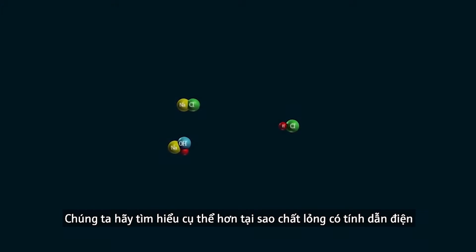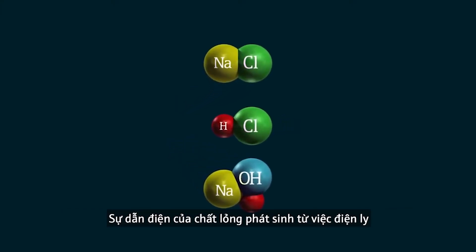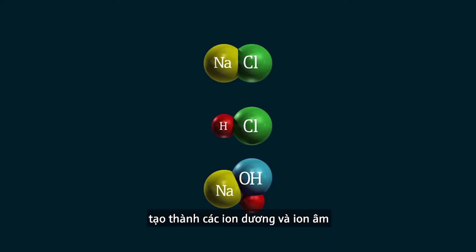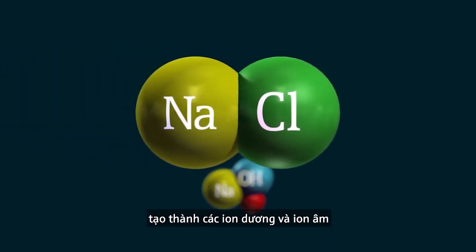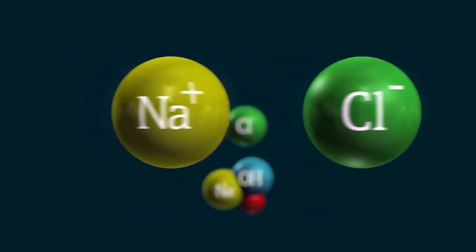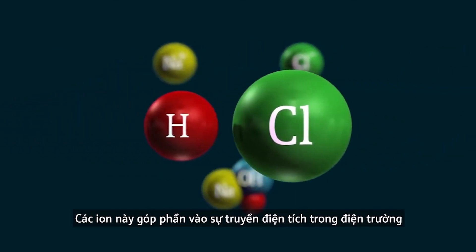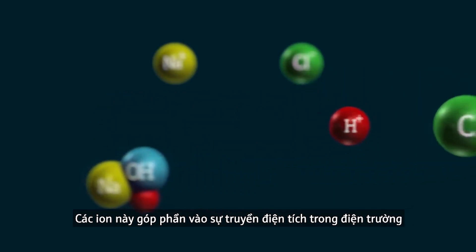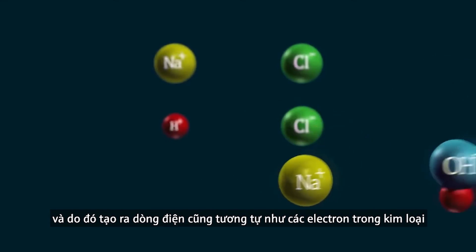The electrical conductivity of a liquid arises from the dissociation of soluble salts, acids and bases to form positively charged cations and negatively charged anions. These ions contribute to the charged transport in the electrical field and thus to the current flow, just like electrons in a metal.